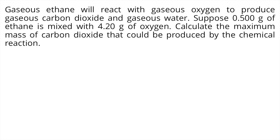Gaseous ethane will react with gaseous oxygen to produce gaseous carbon dioxide and gaseous water. Suppose 0.500 grams of ethane is mixed with 4.20 grams of oxygen. Calculate the maximum mass of carbon dioxide that could be produced by the chemical reaction.